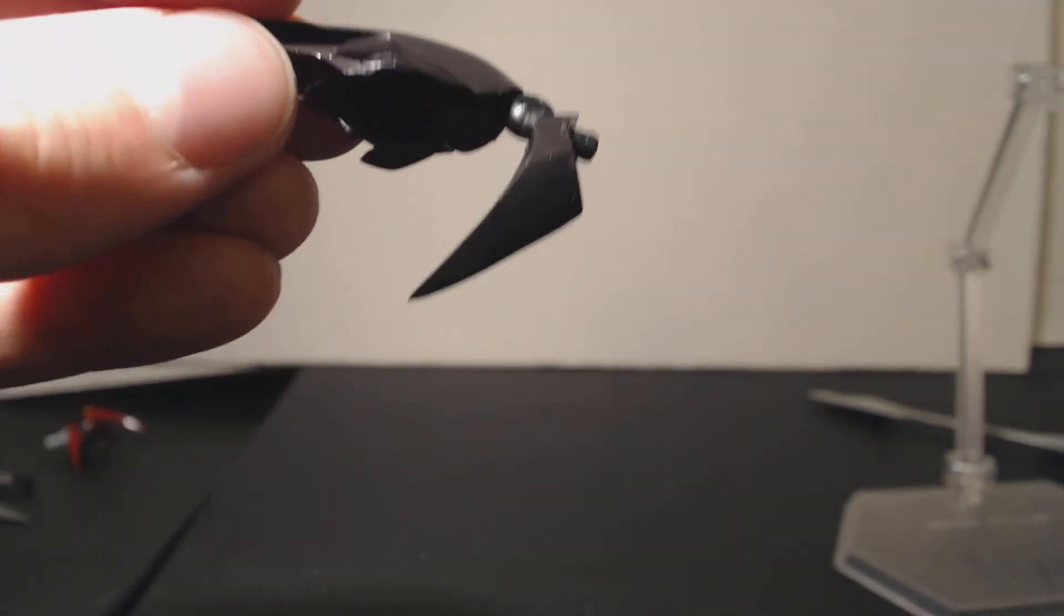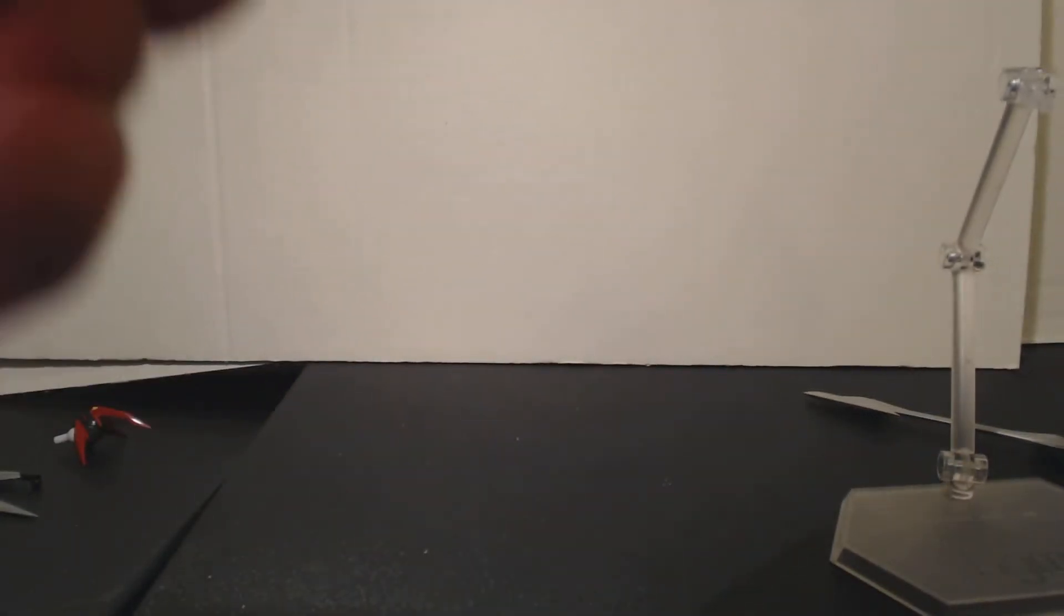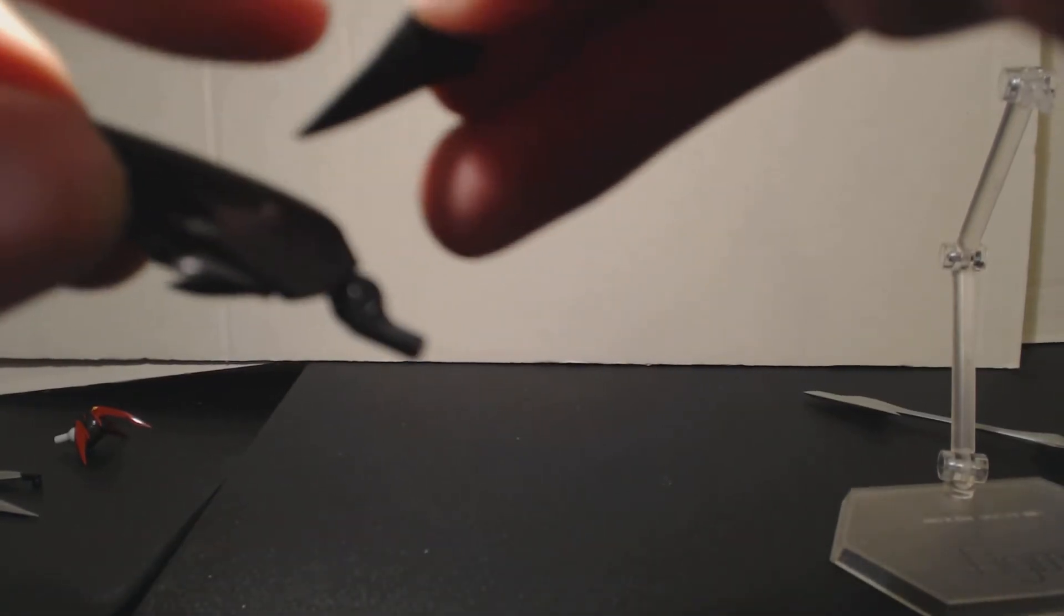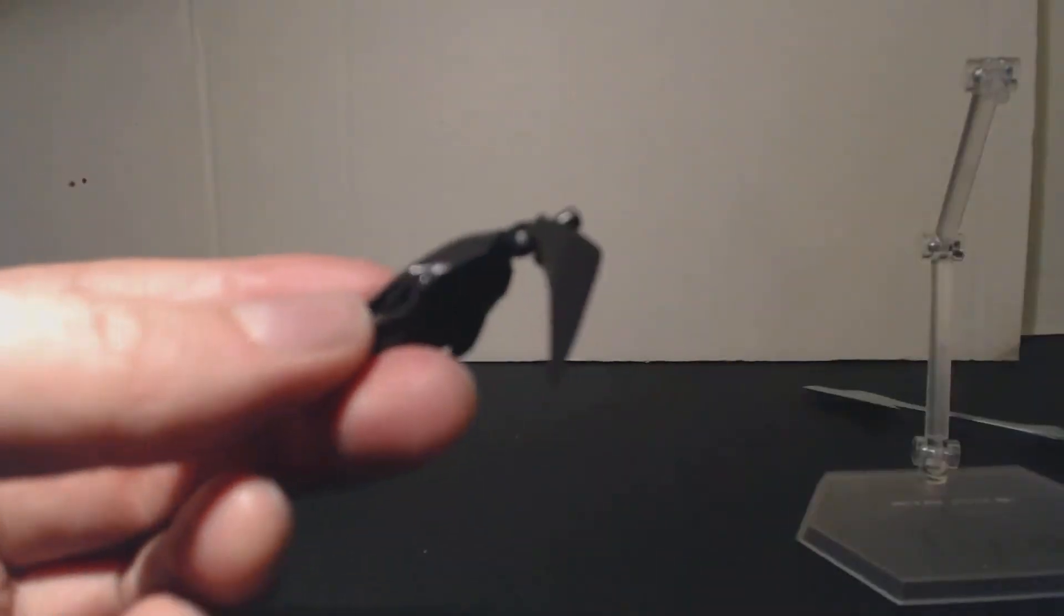So this is the wing here, and there is a joint here. So this is a joint, this is the upper wing, and this is the lower wing. Shoot, sorry. So this is the upper wing here, and this is the lower wing.